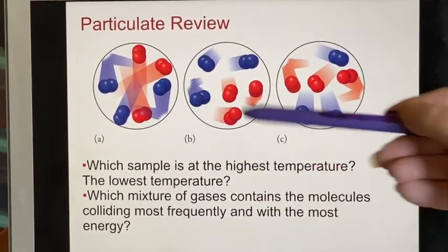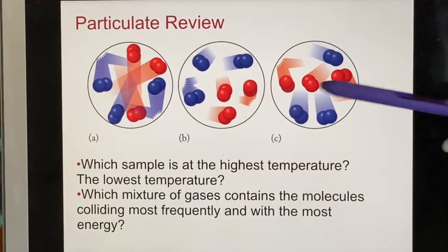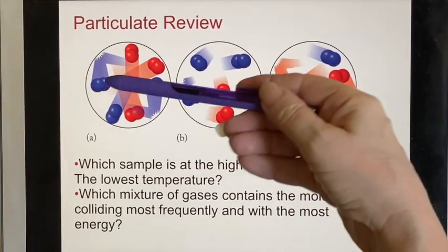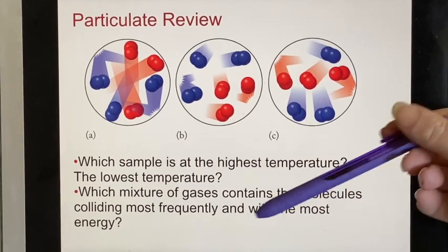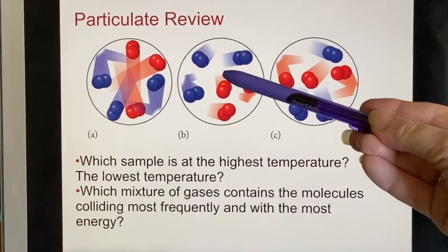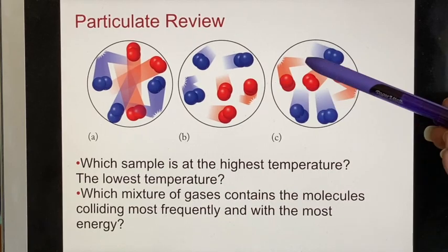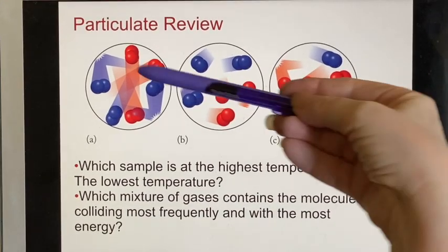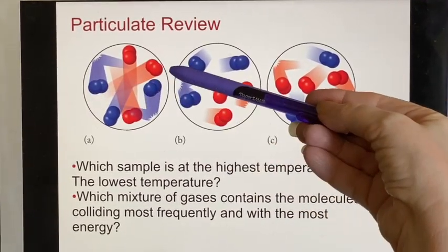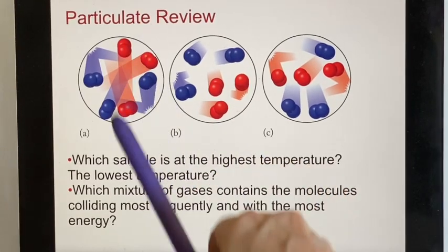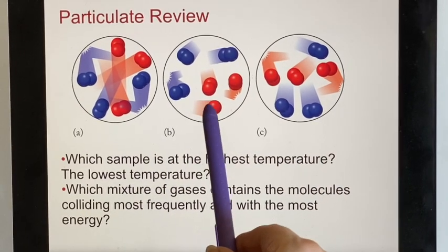If we look at this, we see the samples are the same size. They have the same number of particles in them. So clearly we're supposed to be looking at something about how they're moving. And if we look, this one appears to be moving the slowest. This is a medium speed, and this is moving the fastest. The things that are at the lowest temperature are going to move the slowest. The things that are the highest temperature are going to move the fastest.